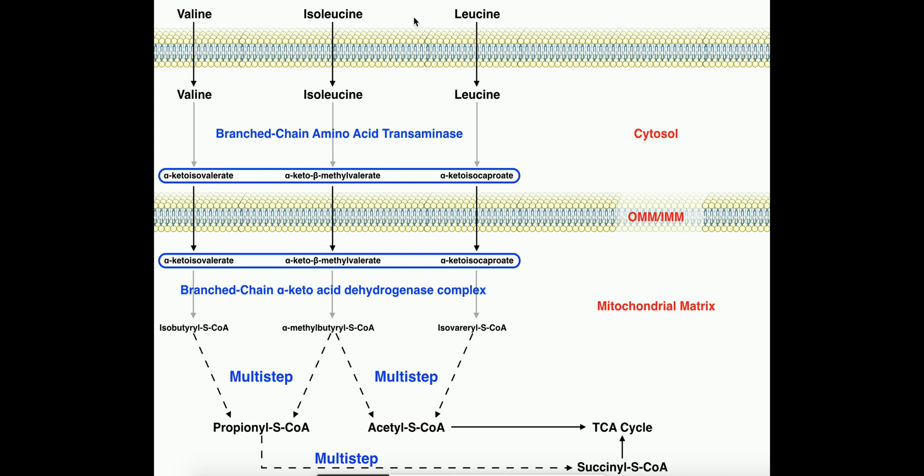However, if the liver senses that the body has too many amino acids, or at least an excess of them, then the liver senses, well, we don't need to distribute any more amino acids to the body. So it's just going to catabolize them for energy. And that's really what the liver's major job is with respect to amino acids.